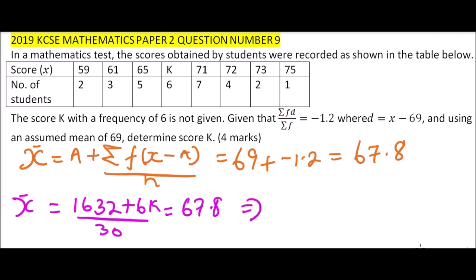Implying that K equals 67. So that's the other way you can also get the value of K in this question. This is an alternative method, I hope you have followed that.